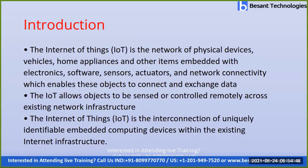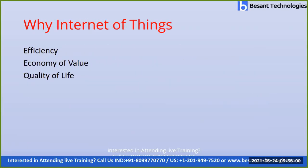IoT is used to make communication between two different devices — it may be an electronic device or a communication between an electrical and mechanical device. We actually need IoT because it is used to make more efficiency, economy of value, and to increase the quality of our life.